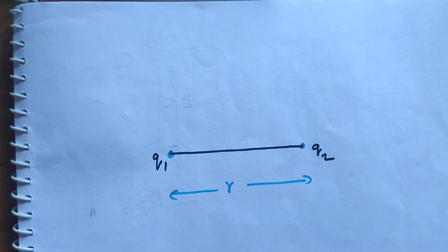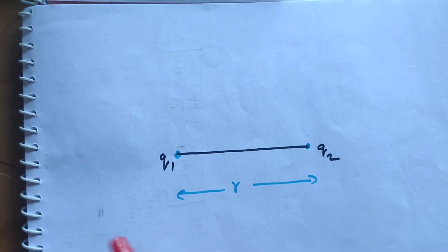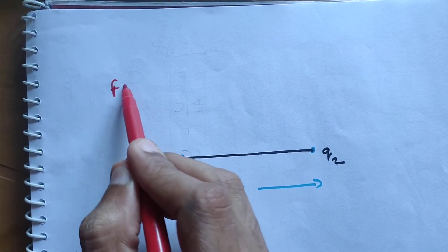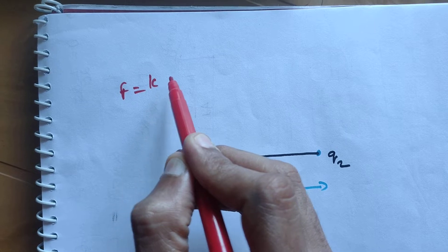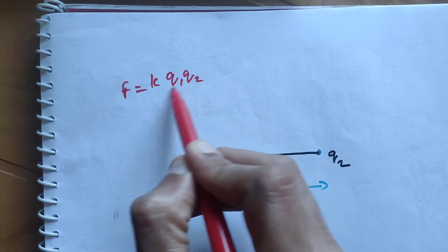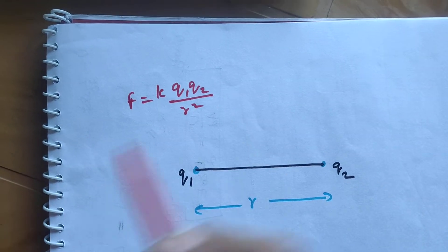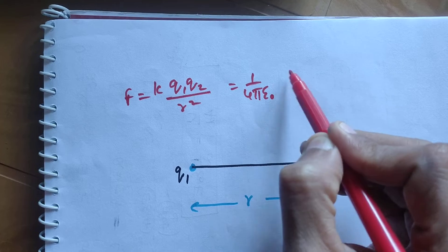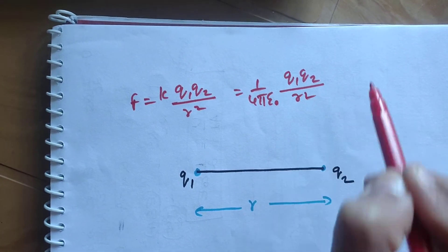Now, the electrostatic force between these two charges, F, is given by F = K × Q1Q2 / R², or equivalently, 1 / (4π ε₀) × Q1Q2 / R².